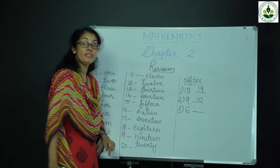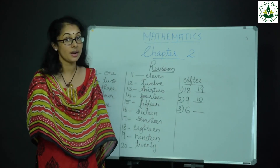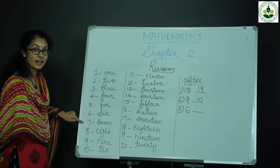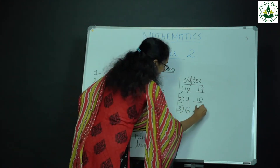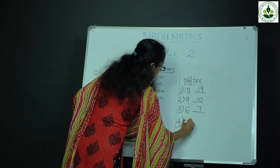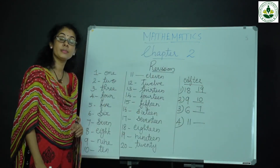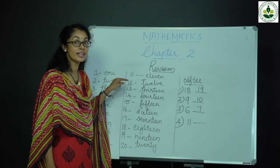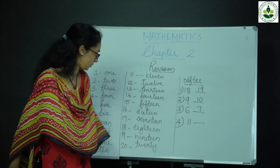Which number comes after 6? Next number is 7. Which number comes after 11? Which number comes after 11? Next number is 12.